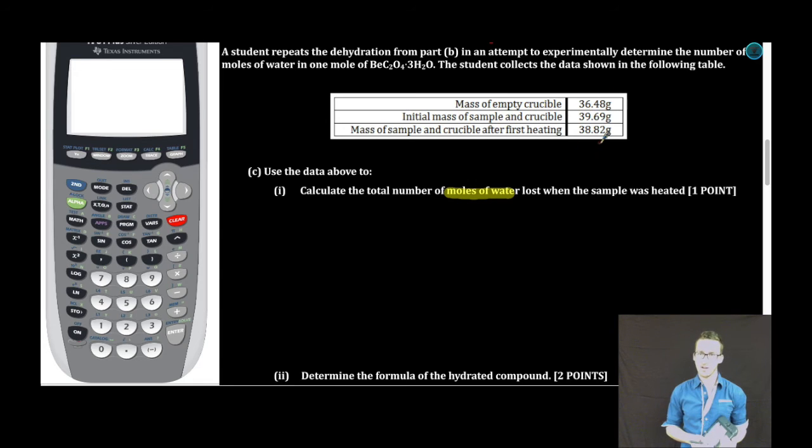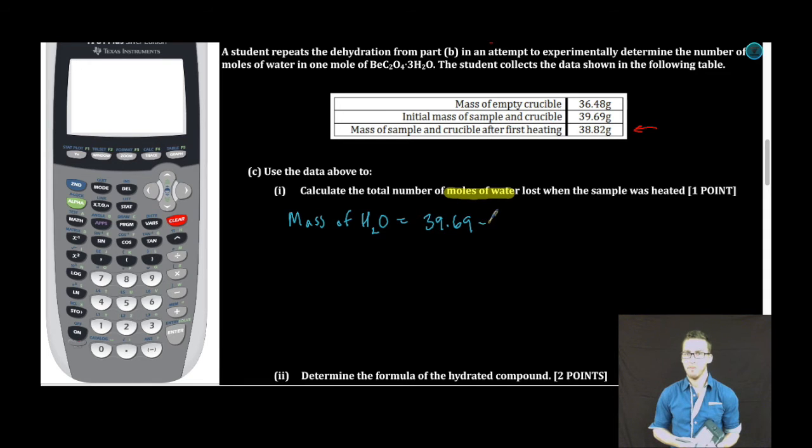As you take a moment to look at the data that you're provided with, we've got mass of the empty crucible, mass of the initial mass of sample and crucible, and the mass of the sample and crucible after the first heating. Basically, when you do this type of experiment, when you heat up the hydrate, you heat off the water. So, after it's heated, we should have just the anhydrous salt and the crucible itself. So, to get mass of water, we're going to do 39.69, or the mass of the original hydrated sample in the crucible, minus 38.82, or the mass of the crucible in the sample after it's been heated. Presumably, after all the water has been driven off. And the difference in that mass is going to be the mass of our water.